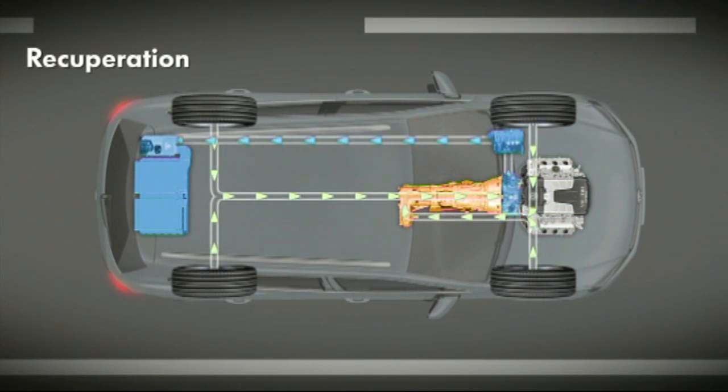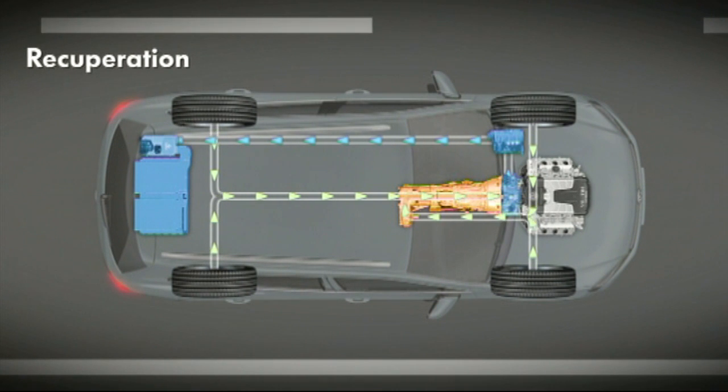When the driver brakes, the new Touareg Hybrid makes use of the braking energy. The electric motor then works as a generator and converts kinetic braking energy into electrical energy. This is stored in the high-voltage battery and is available to the driver the next time the car starts off.